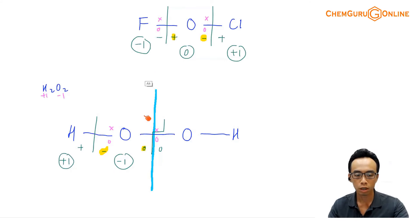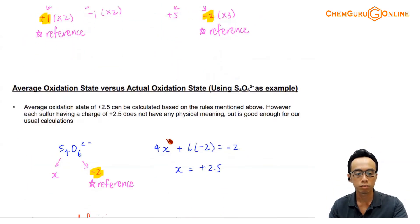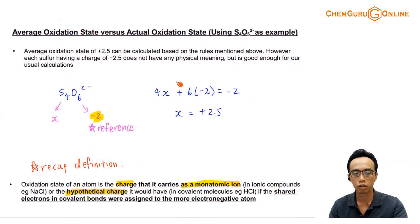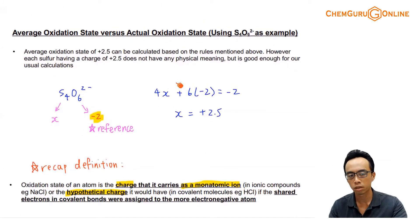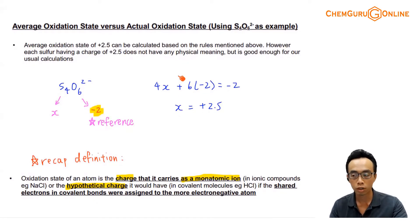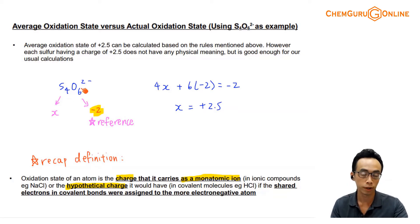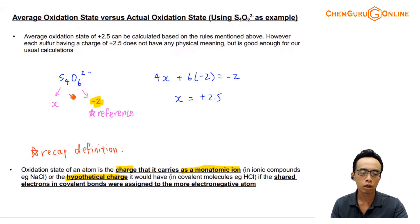Let us continue. We want to compare the average oxidation number versus the actual oxidation number, which is pretty interesting. If you're given S₄O₆²⁻, you're going to find the oxidation state of sulfur.